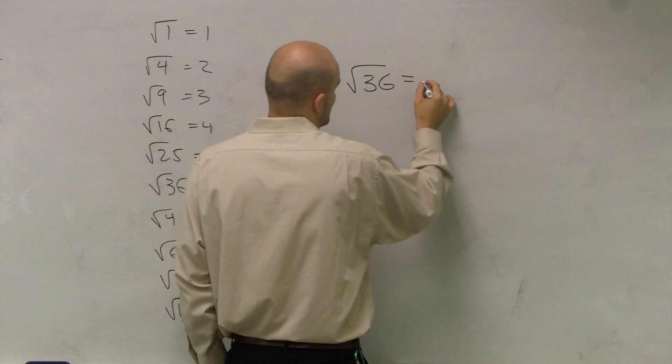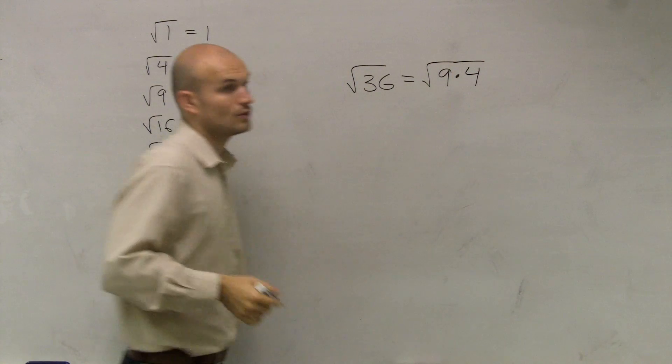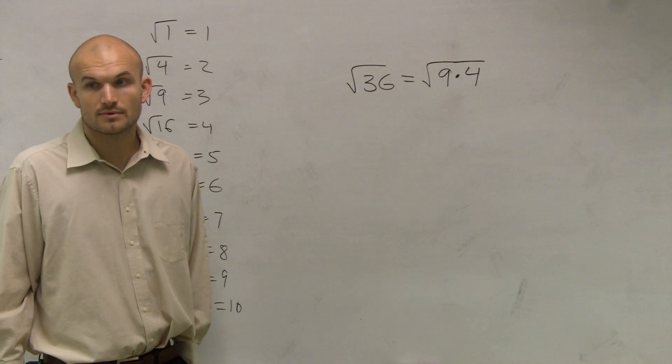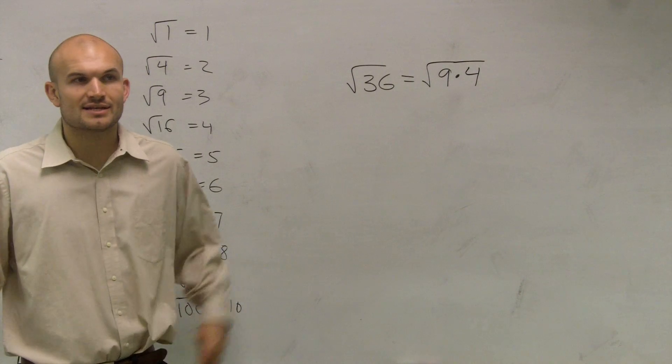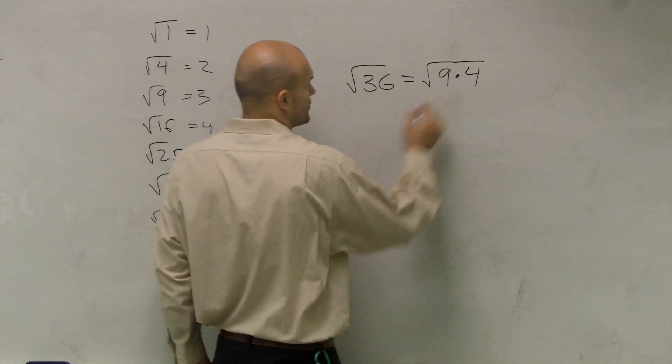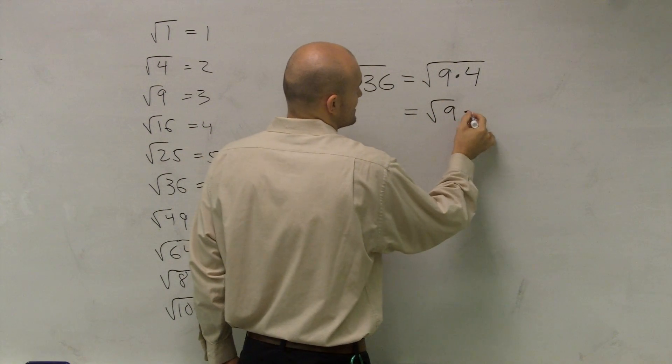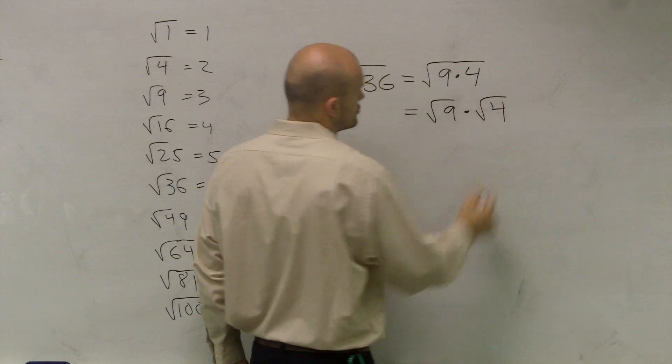I could rewrite the square root of 36 as the square root of 9 times 4. Correct? Now what I want you guys to understand is here's the little rule, and I'm going to prove to you why the rule works. The square root of 9 times 4, that is equal to the square root of 9 times the square root of 4.